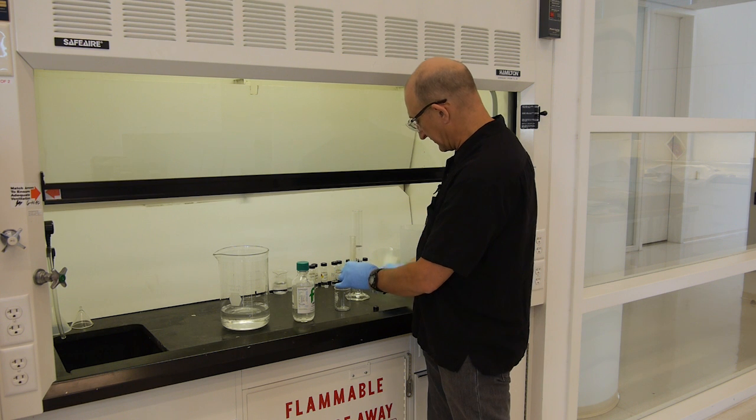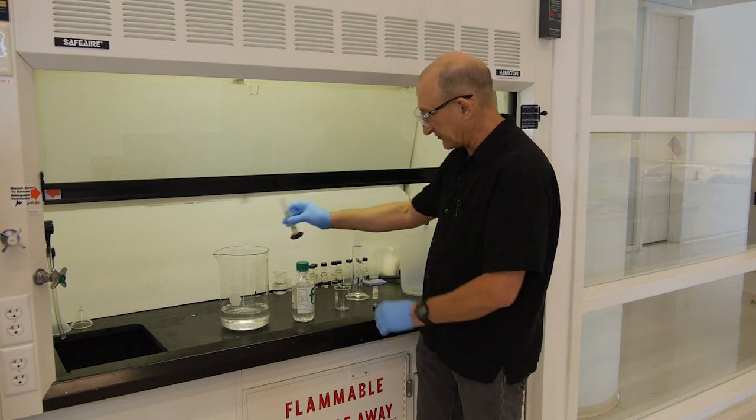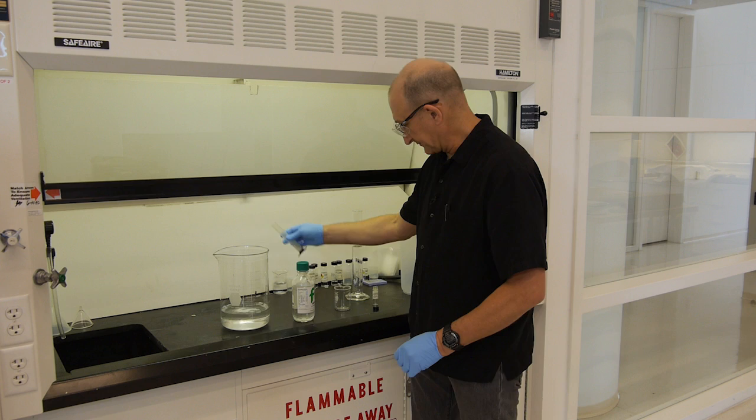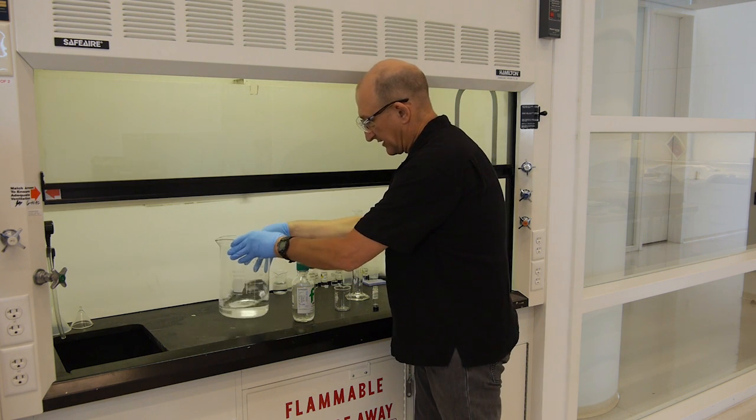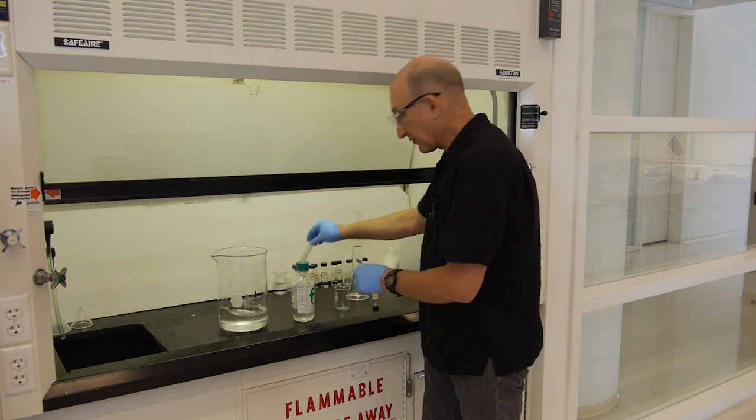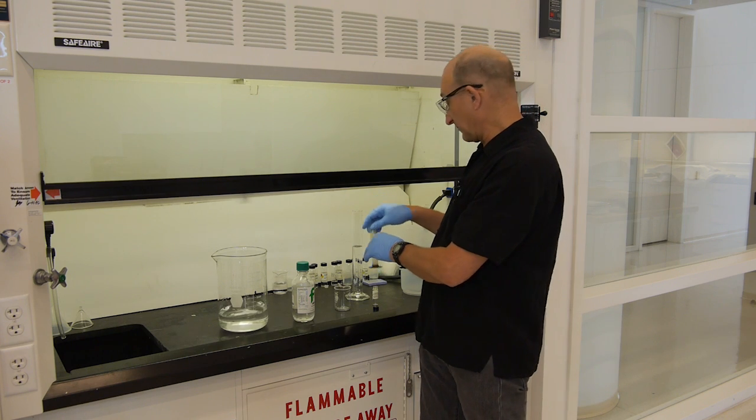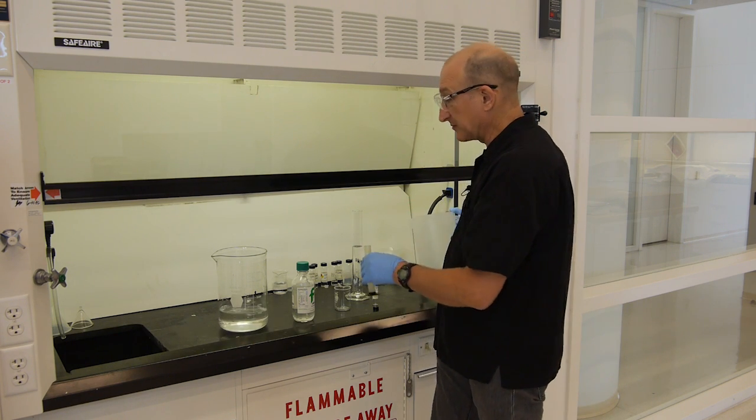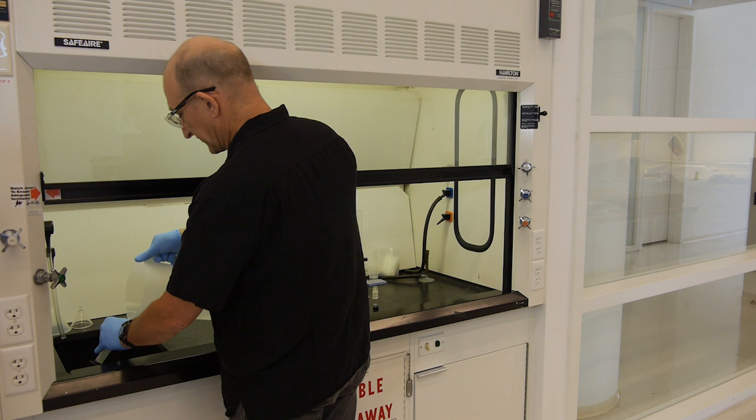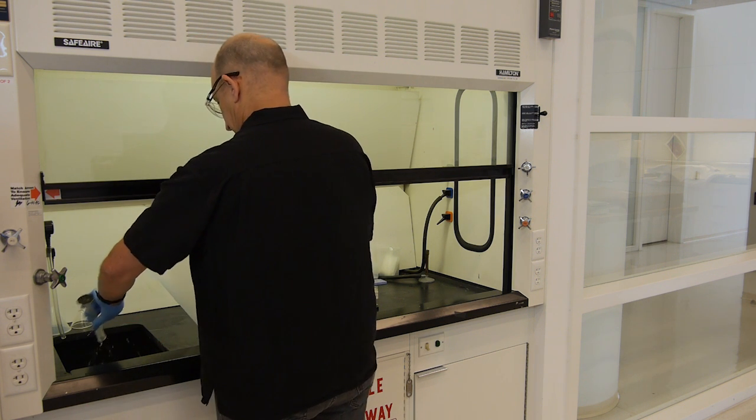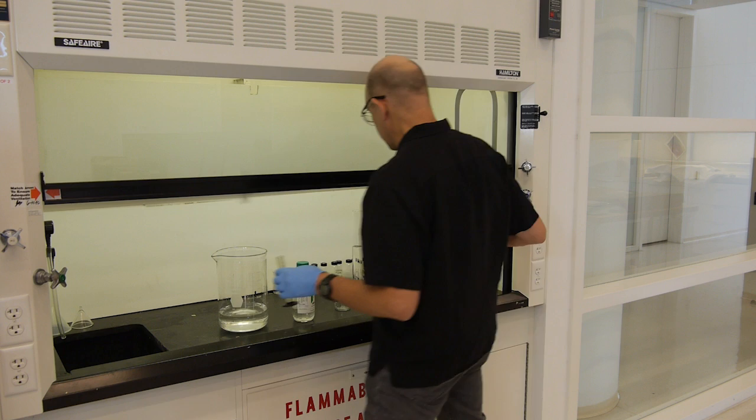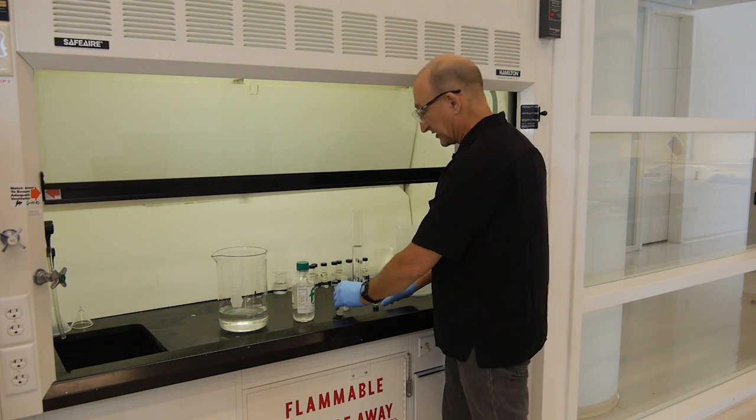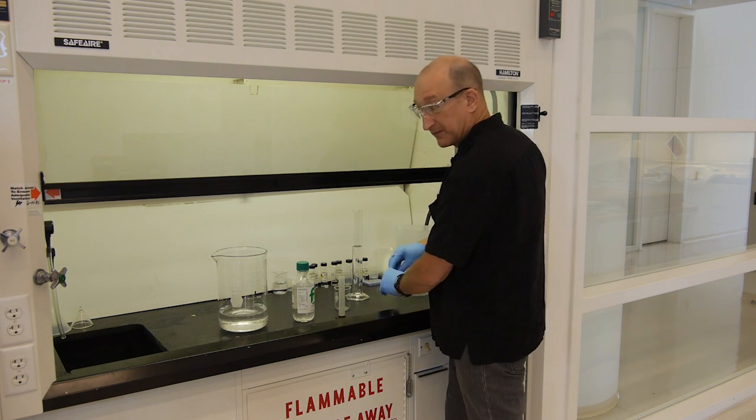So there's 10 milliliters of glacial acetic acid, and that's ready to go. Now we also want to make the 10% ammonium hydroxide solution. So we'll just rinse this out. Obviously, we don't want the acetic acid mixing with the ammonium hydroxide in concentrated form.